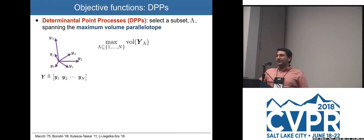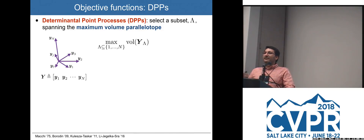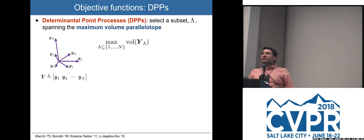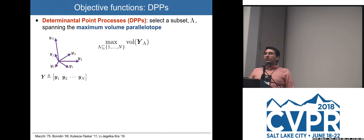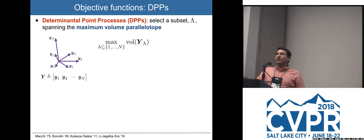Let's start with Determinantal Point Processes, or DPPs. Assume we have a data set consisting of vectors y1, y2, up to y_N, collected as columns of a matrix Y. The goal is to select the most representative columns — a subset called lambda. The DPP criterion finds a subset lambda such that the volume of the parallelotope spanned by those vectors is maximized. We are maximizing the determinant of Y_lambda^T Y_lambda over all possible subsets.